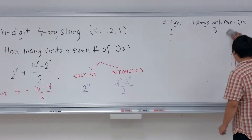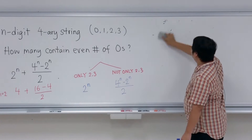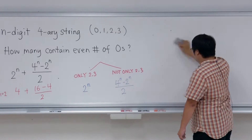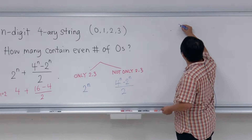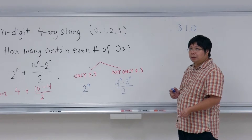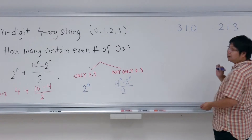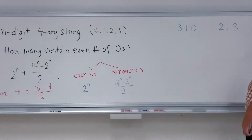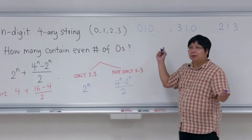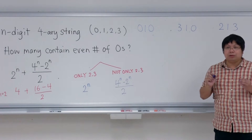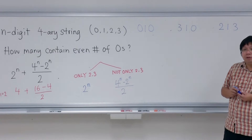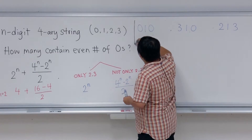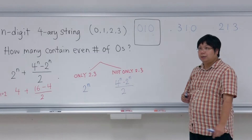The idea is the same as before — we use the rule of quotient and grouping. We try to group strings together. A typical string in this group (not just twos and threes) might look like 3-1-0, or 2-1-3, or 3-3-1, or 0-1-0. These strings contain some zeros or some ones.